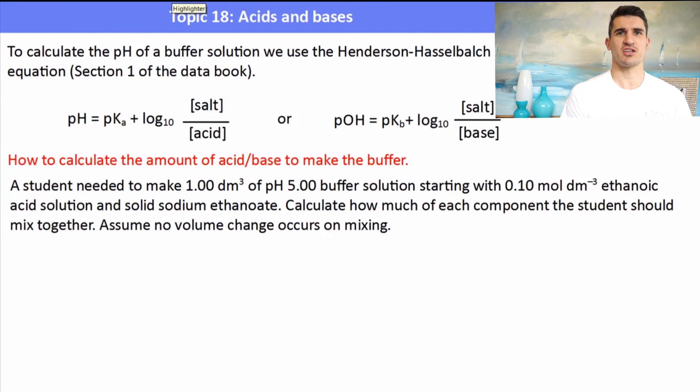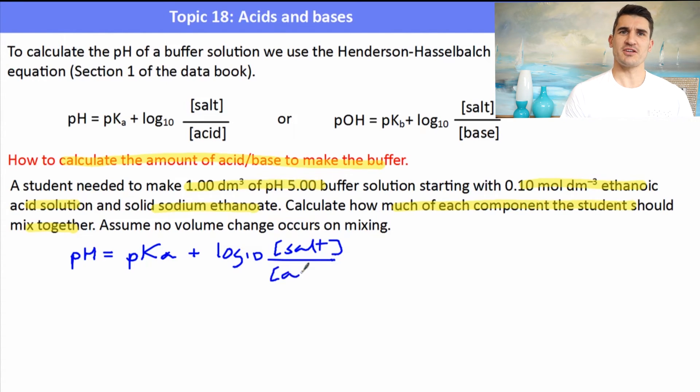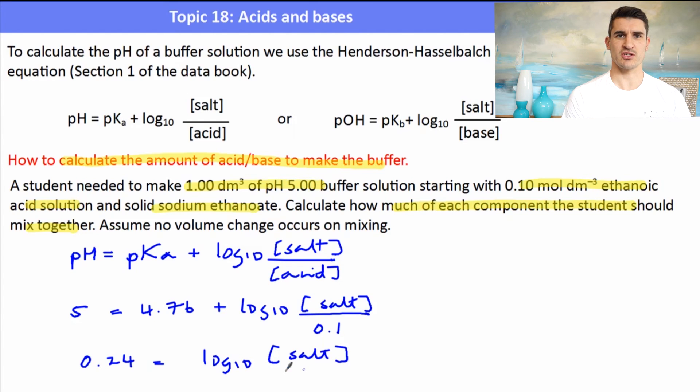The second type of pH calculation might be to calculate the amount of acid or base required to make a buffer. So a student needed to make one decimetre cubed of a pH buffer 5 starting with ethanoic acid and sodium ethanoate. How much of each compound should the student mix together? Assume no volume change takes place. Again we're using an acid buffer because we start with an ethanoic acid solution so we're going to use the acid version of the equation and we set it up in exactly the same way. The information that we've been told is the pH we want is 5. The pKa of ethanoic acid we can use the data book to look up and then we need to work out the concentration of our salt. We've been given the concentration of the acid which is 0.1 molar and because we will need a decimetre cubed of it we'll work with one litre of that solution. Taking the 4.76 to the other side we're left with 0.24 equals log 10 of the concentration of salt over 0.1.